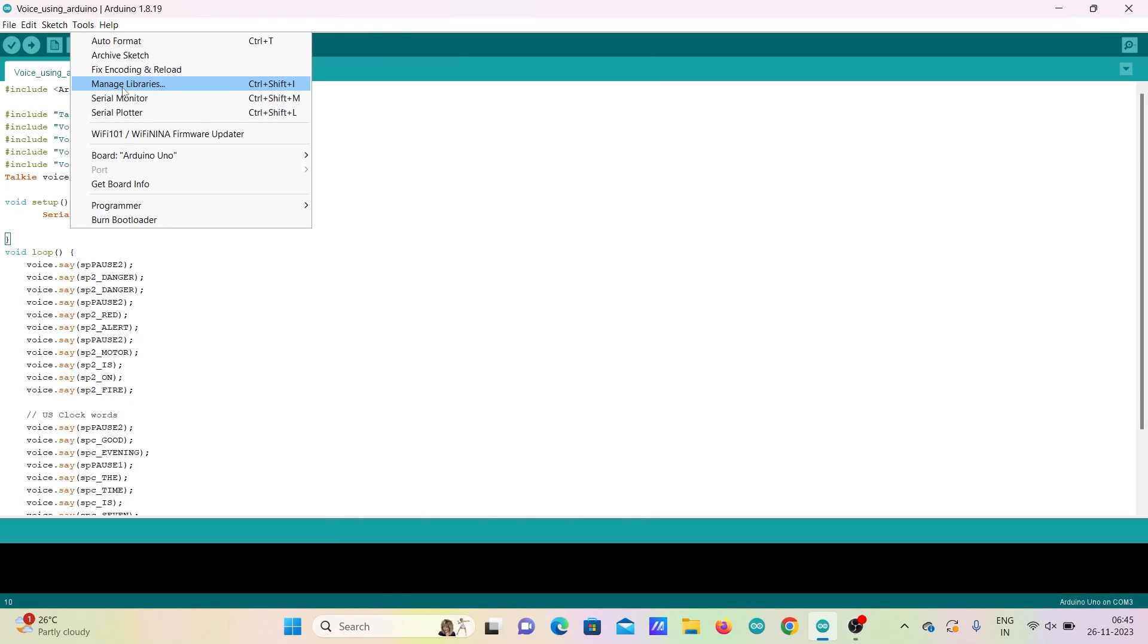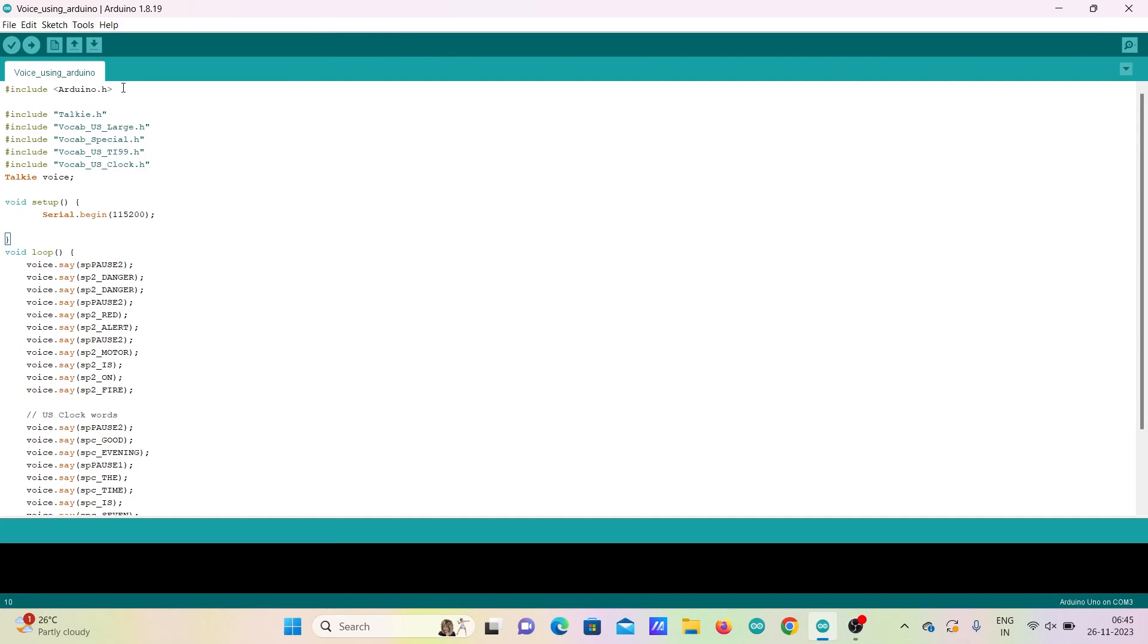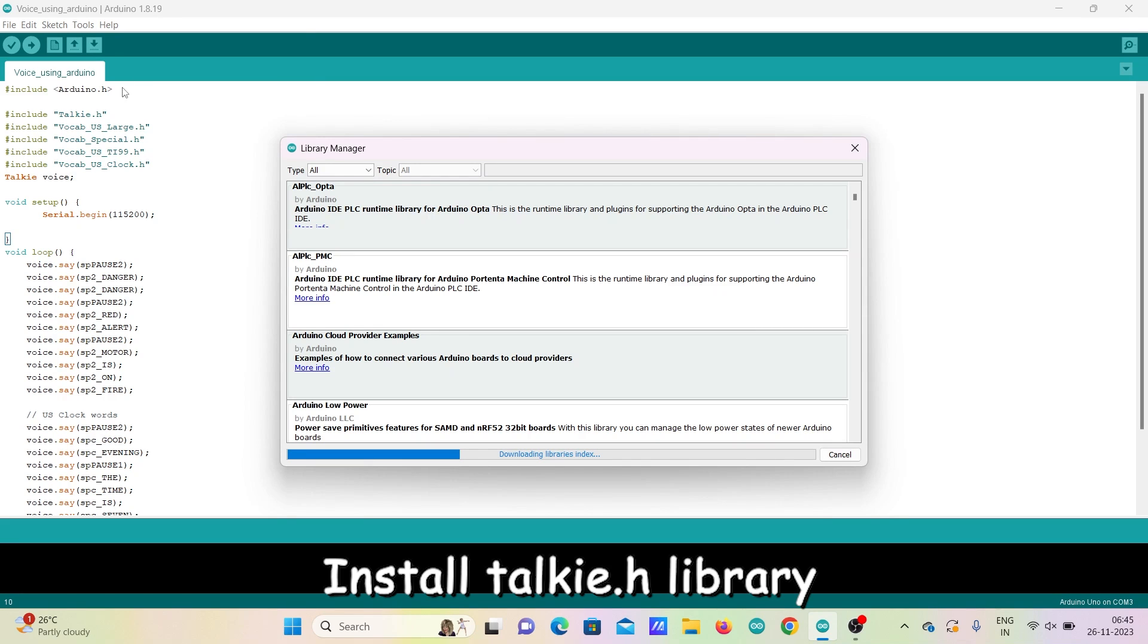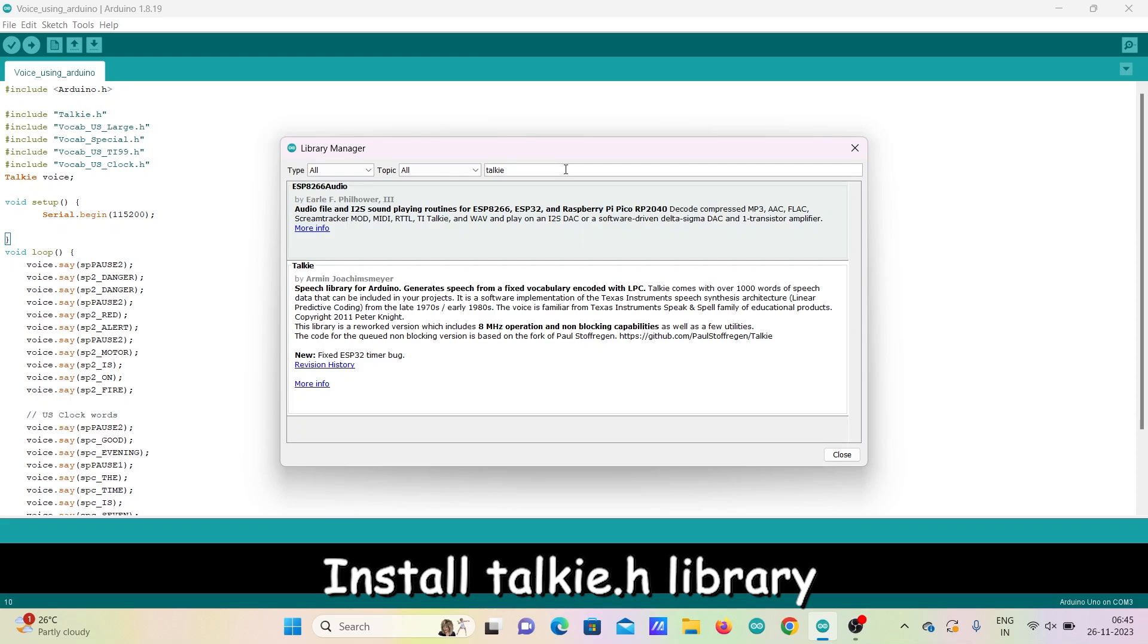The connections are complete. Now open IDE software and we have to install talkie.h for this code to work. Talkie.h generates speech from a fixed set of words from vocabulary encoded with LPC. Talkie comes with over 1000 words of speech data that can be included in your projects.